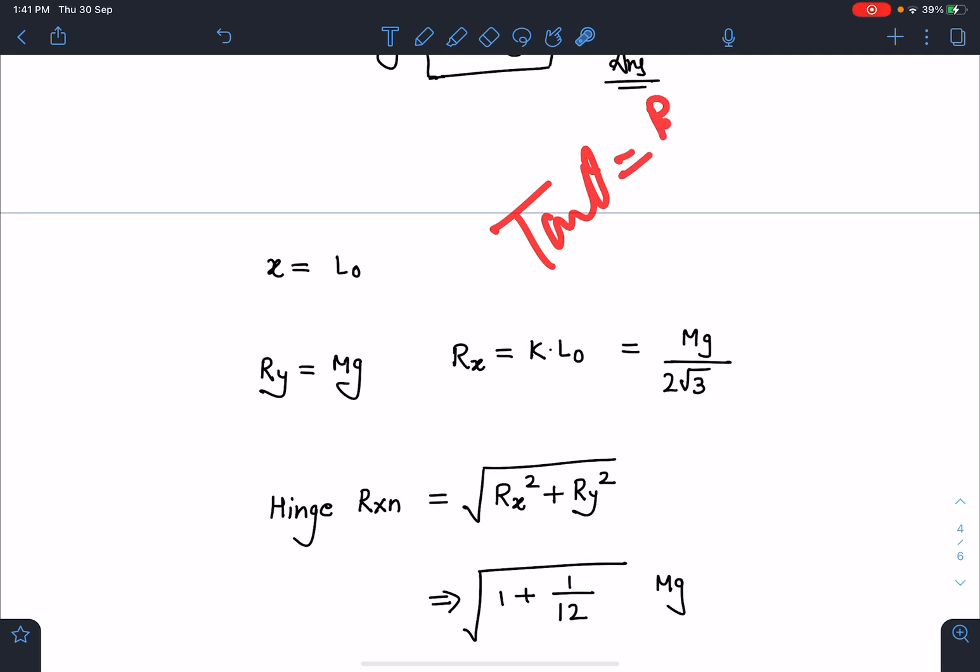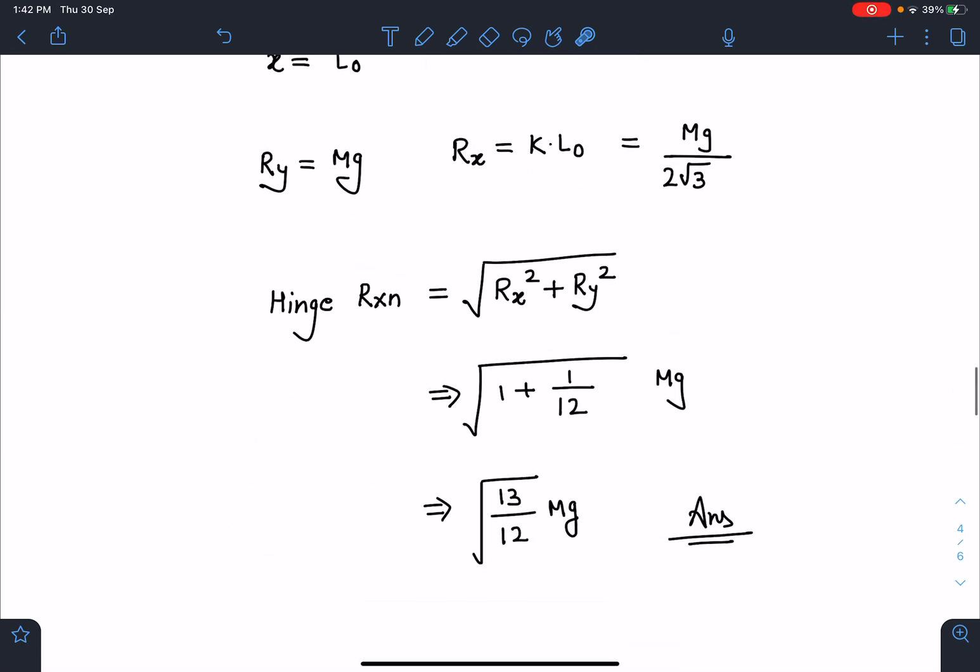Tan θ is not Ry/Rx, this is wrong. You cannot take tension always along the length of the rod, it can be in any direction. So hinge reaction here you can write √(Rx² + Ry²). If you substitute the values and simplify, we are going to get finally the hinge reaction as √(13/12) times Mg. This is going to be the final answer for this problem.